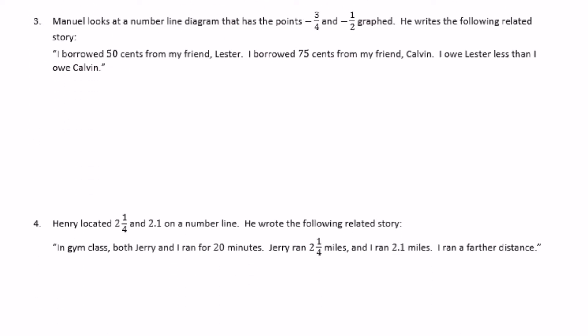Number three. Manuel looks at a number line diagram with negative three-fourths and negative one-half graphed. He writes: I borrowed fifty cents from my friend Lester and seventy-five cents from my friend Calvin — I owe Lester less than I owe Calvin. Fifty cents equals fifty out of one hundred, or fifty-hundredths, which equals one-half. Since you borrowed it, you're down fifty cents, so that's negative one-half. Seventy-five cents is seventy-five hundredths, which equals three-fourths, and borrowing it means you're down seventy-five cents, or negative three-fourths.